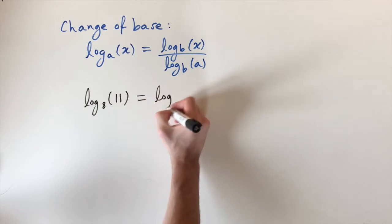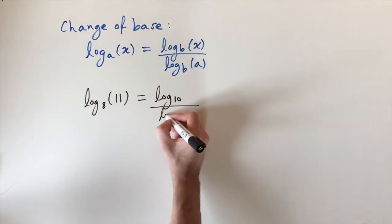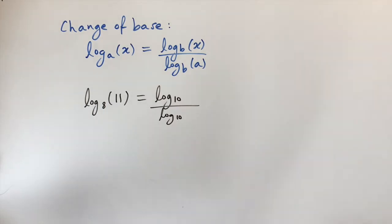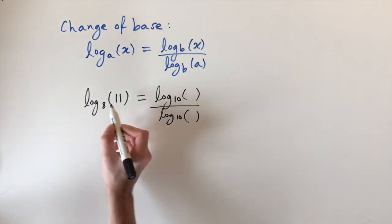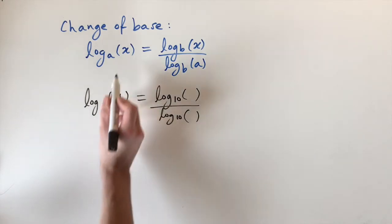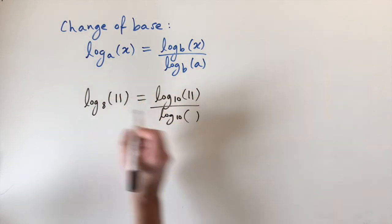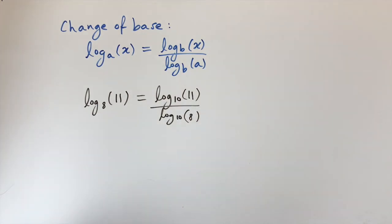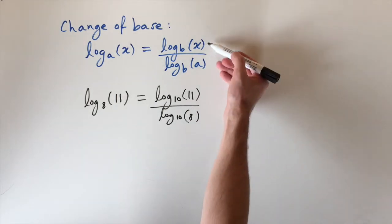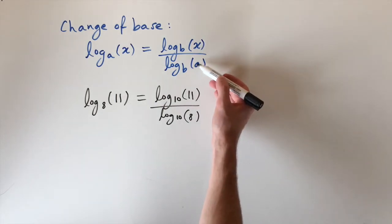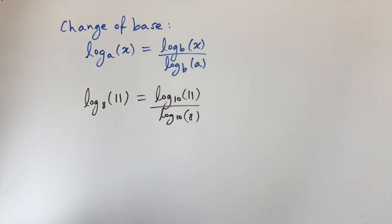They're now both base 10. And then the question is what are these numbers that we put in here? By this formula, it's just the number in here, the x value, goes on top and the old base little a goes on the bottom. It's also a really nice way to remember the formula because x is slightly higher than a in the formula, so x appears on the top of this fraction and a appears on the bottom.